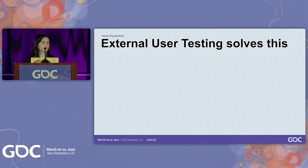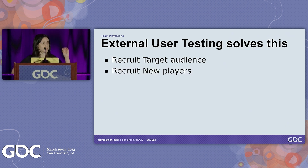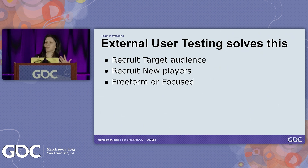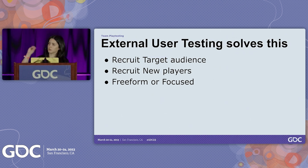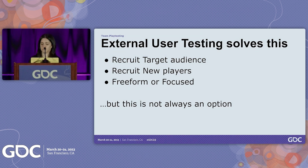External user testing usually solves this for us. When we externally test, we look for participants from the target audience — sometimes new players so we can specifically get a fresh perspective. These tests can be freeform where players play more organically, or focused where we look at a specific part of the game for deeper insight. But external testing is not always available since sometimes there's no bandwidth or budget, and some smaller teams may not have access to it all the time.